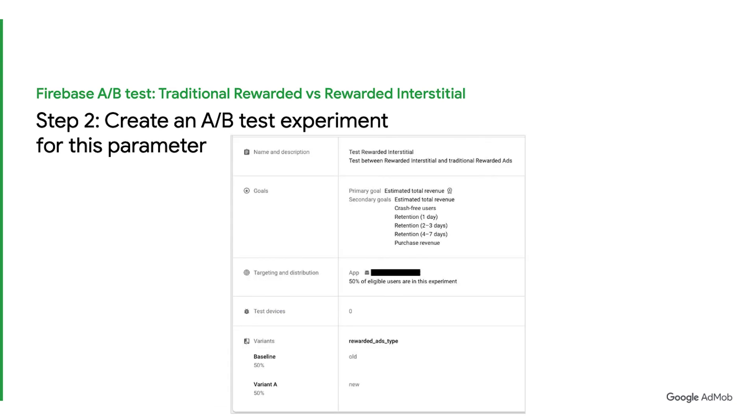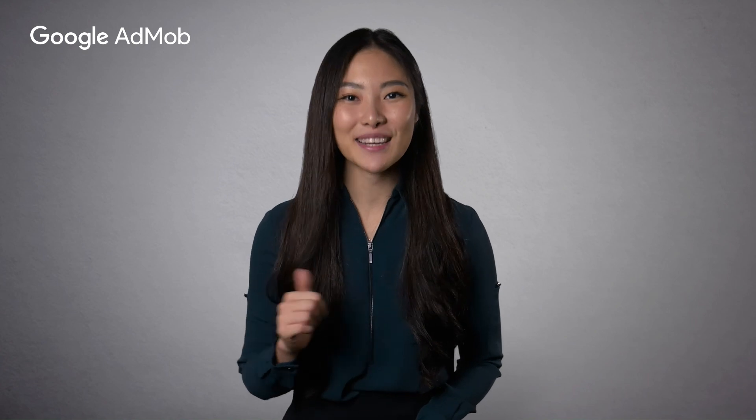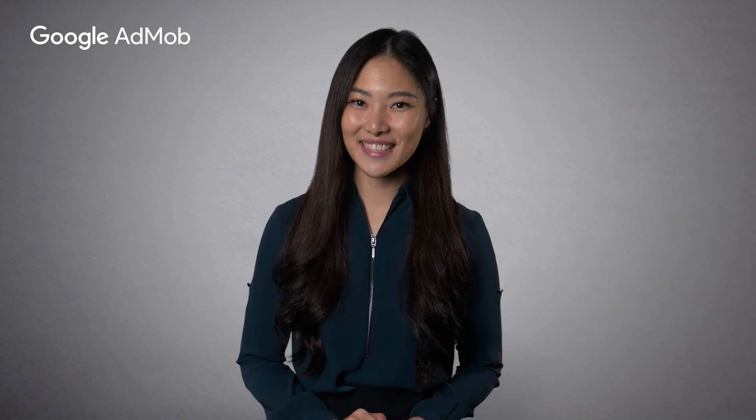Finally, review your experiment and run it. And that's all we have today. If you found this video useful, do give us a like and subscribe to our channel for more best practices and tips to grow your app further. There are also resources in the description box below to help you set up rewarded interstitials. See you next time!